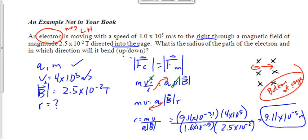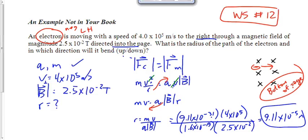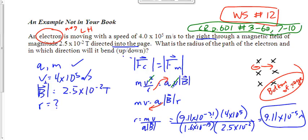Now I'd like you to work on worksheet number 12. Once you're almost finished, we'll look at the homework questions: check and reflect, page 601, numbers 3 to 6A — there's a 6B but you're not doing it — and then 7 to 10. Finish worksheet 12 if you haven't, then do check and reflect page 601, numbers 3 to 6A and 7 to 10.